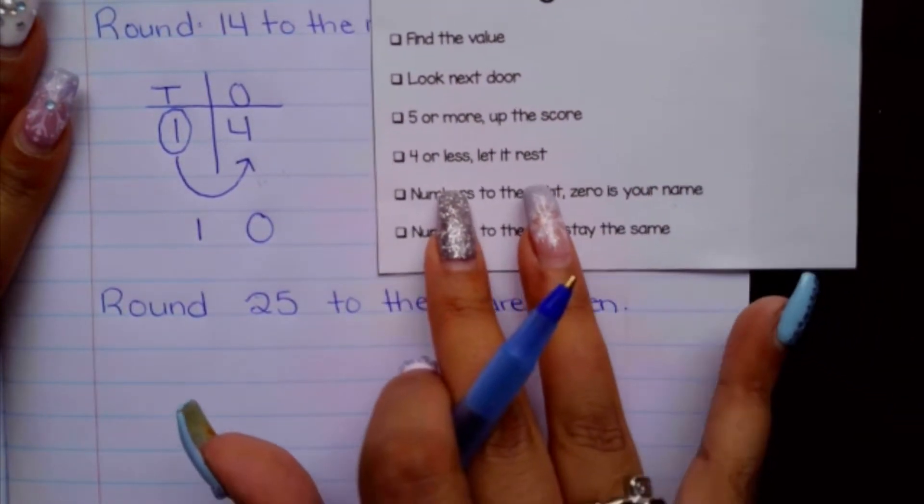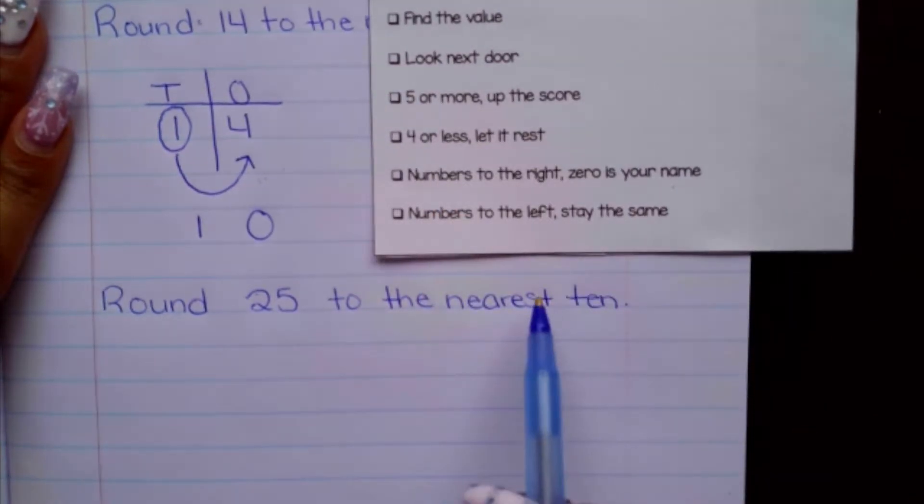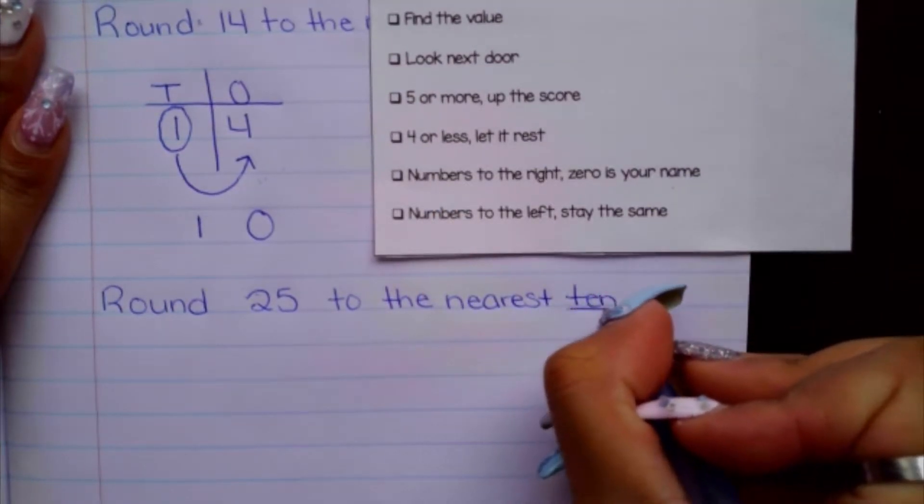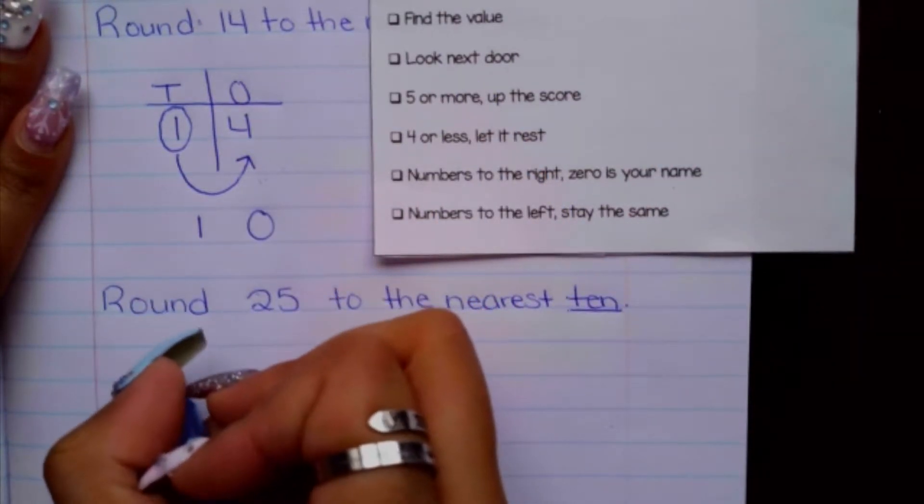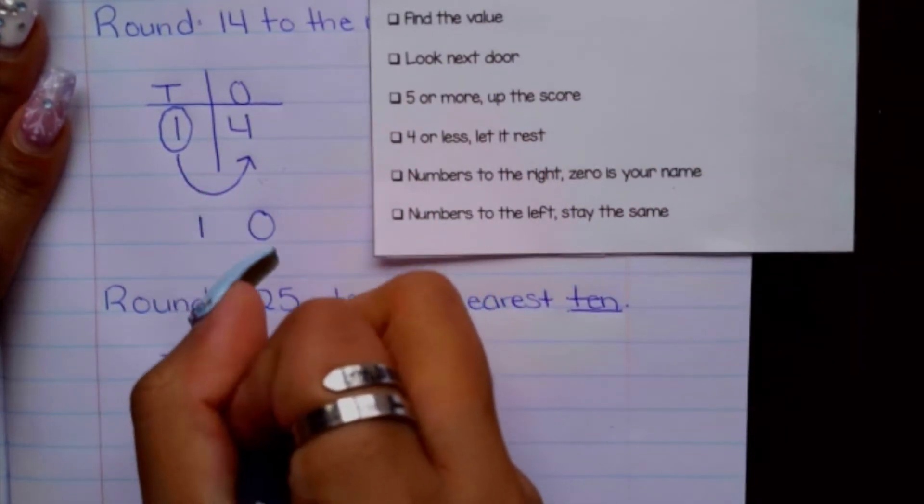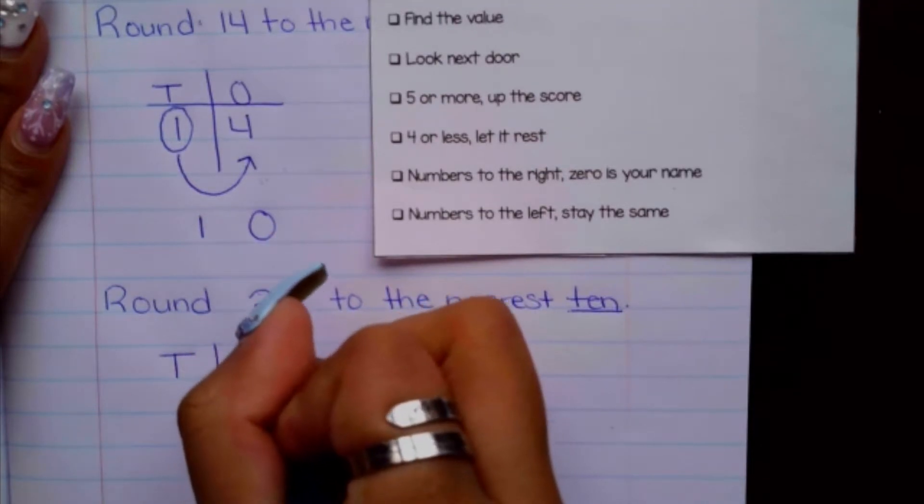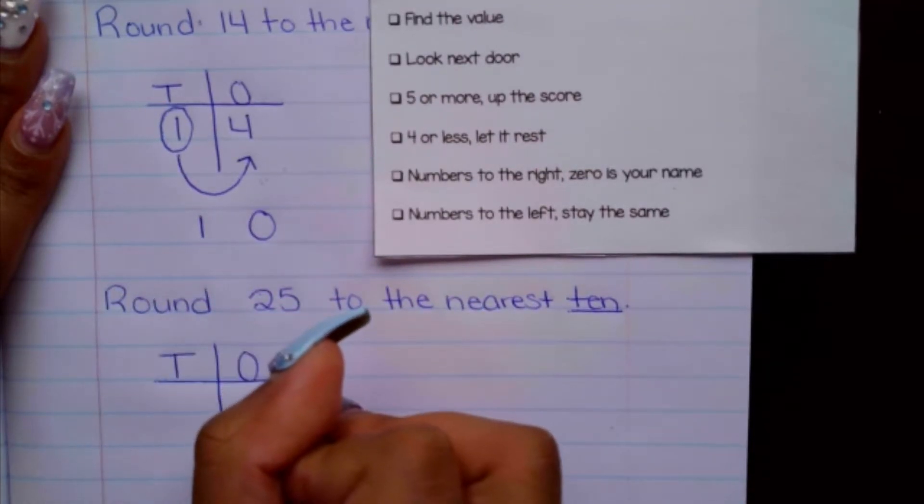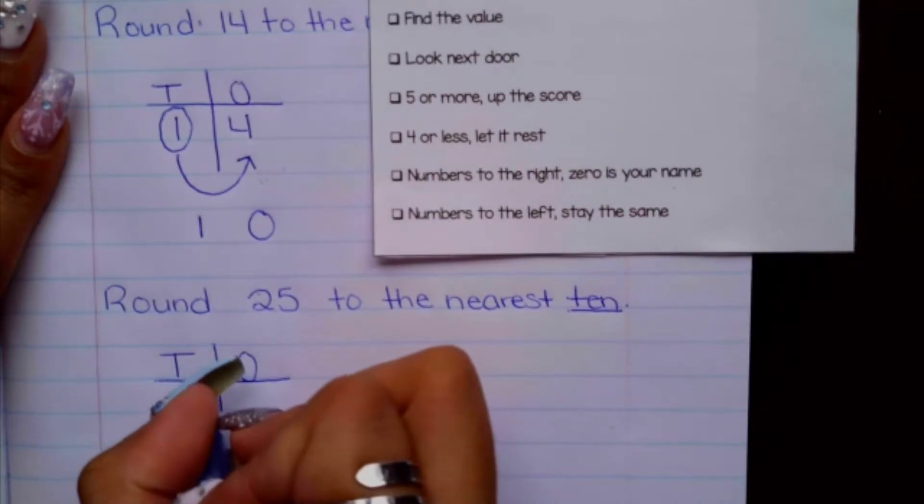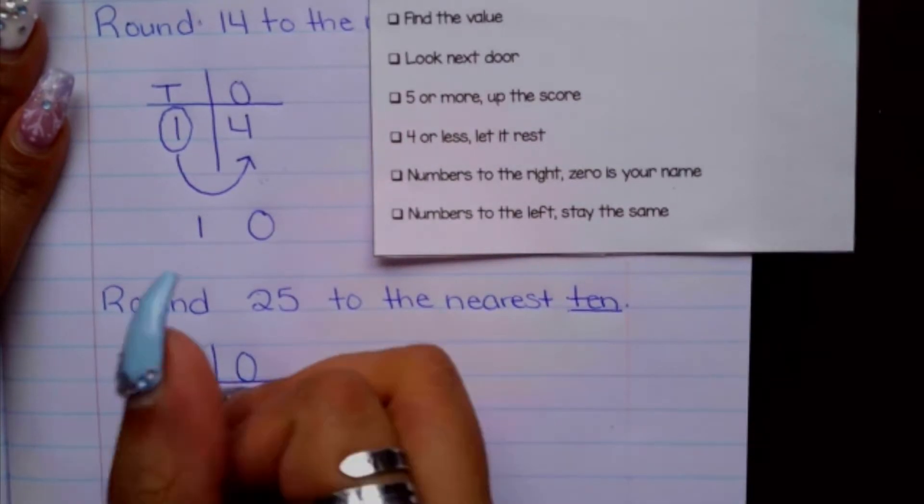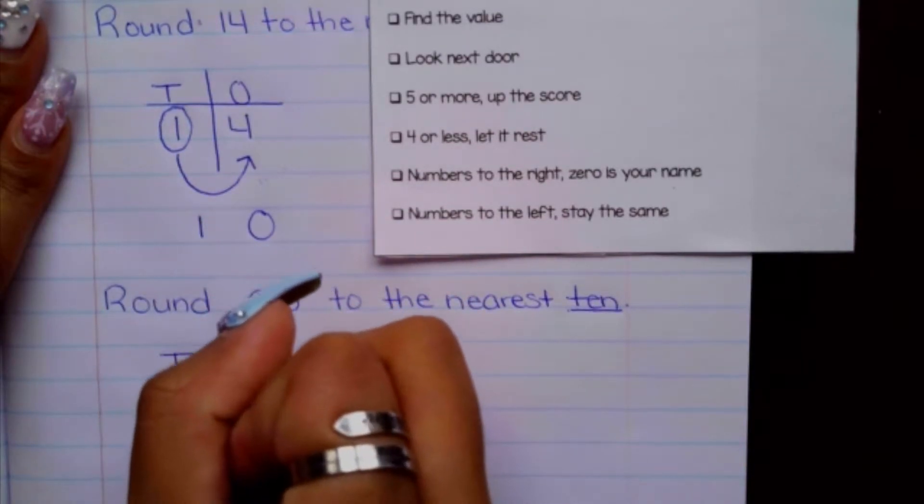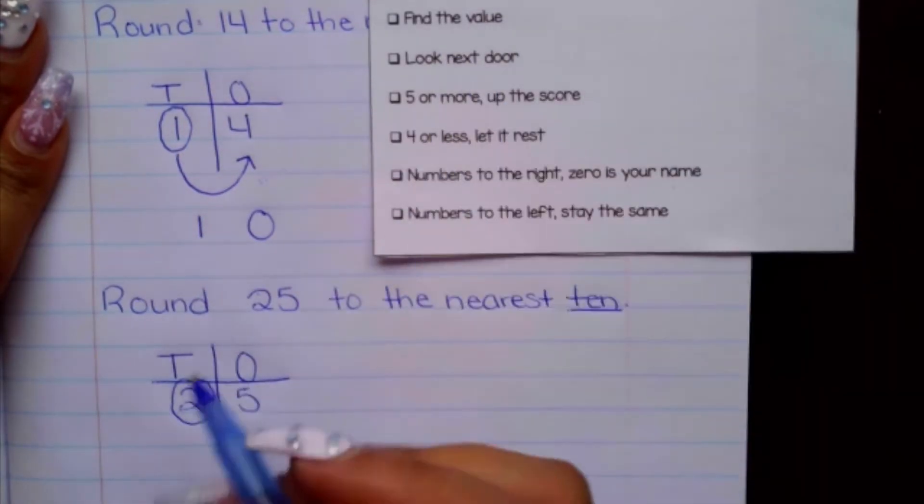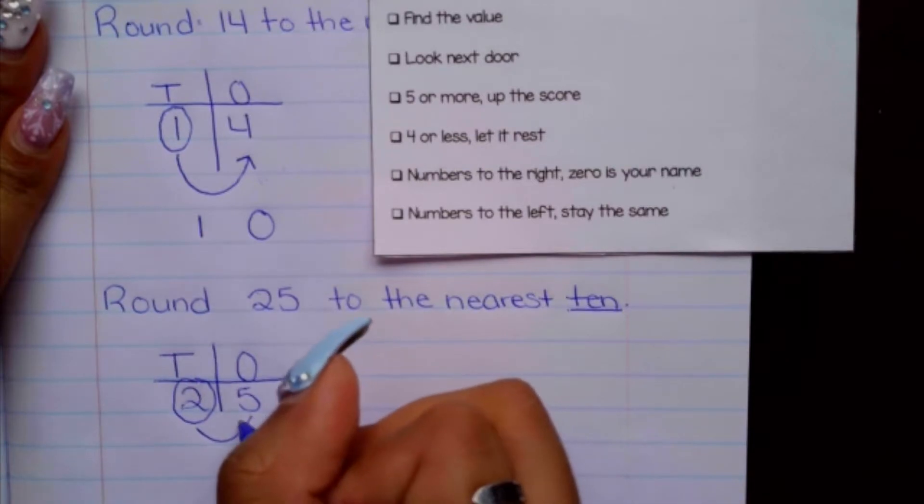Okay, so let's go ahead and follow our checklist again. So we are rounding to the nearest 10, and I'm going to put this into my place value chart here. And my first step is to find the value, which is two, because it's in the tens place. Look next door, going to draw my arrow to next door.